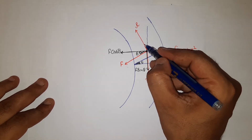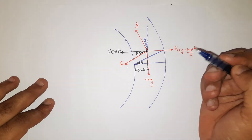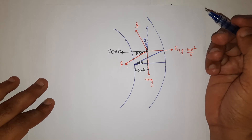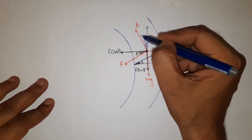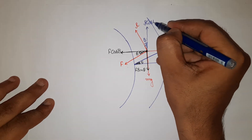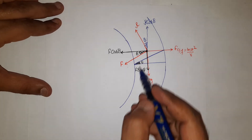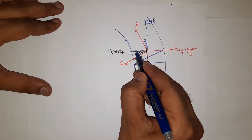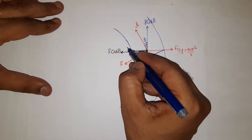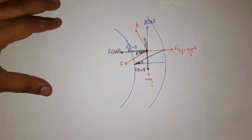The components of normal reaction: since the normal reaction makes angle theta with vertical, one component is R·cosθ (vertically upward) and the other component is R·sinθ (horizontally towards center).